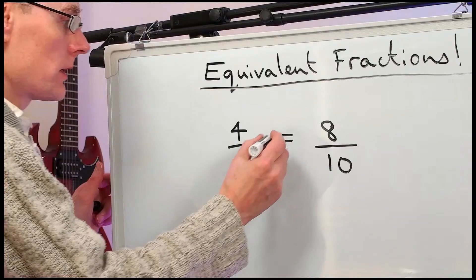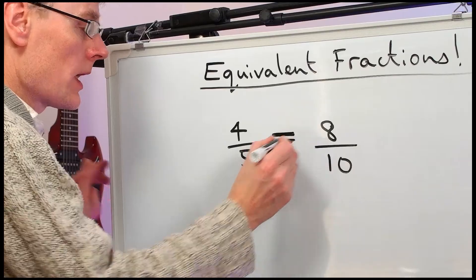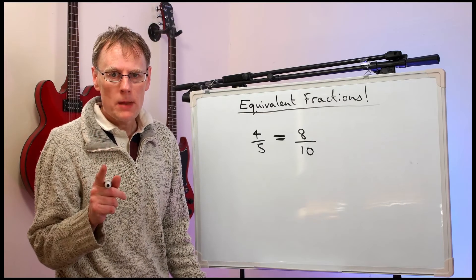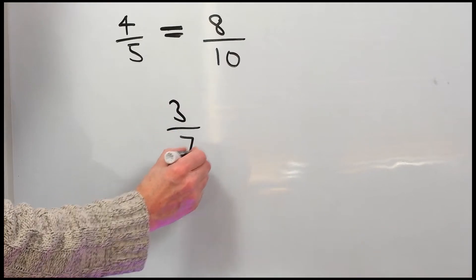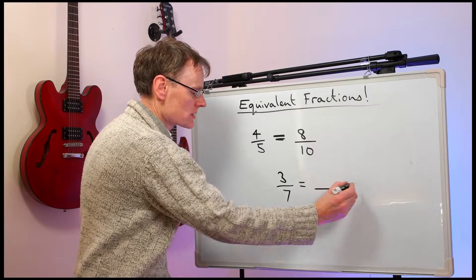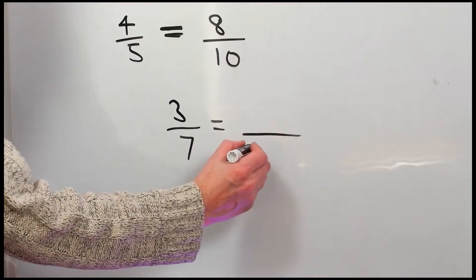That equals sign is very important. Equals means the same as. Now look at this one. Let's go for three-sevenths. That could be the same as something out of seventy.